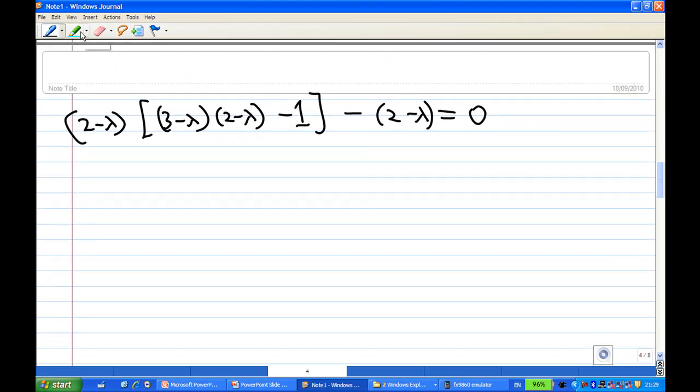Now notice that there's a common factor of (2-λ), so I can factor out (2-λ). I'll get [(3-λ)(2-λ) - 1 - 1].